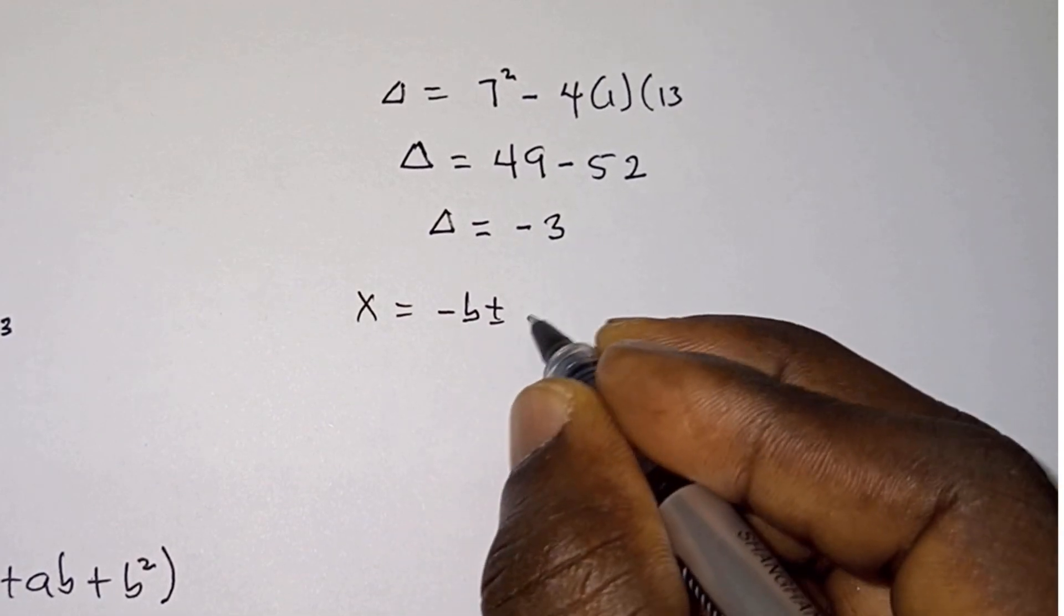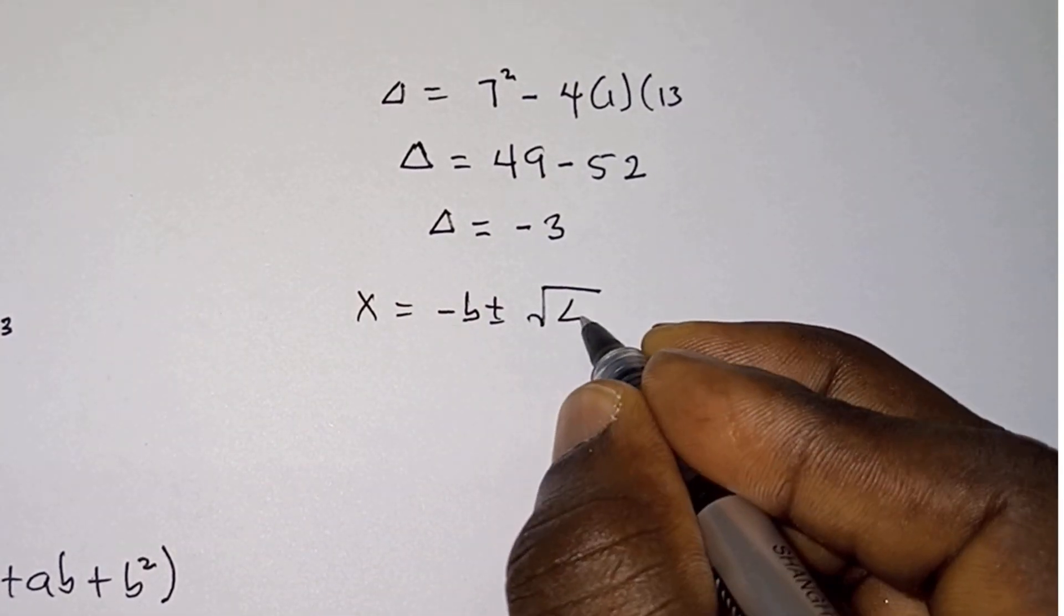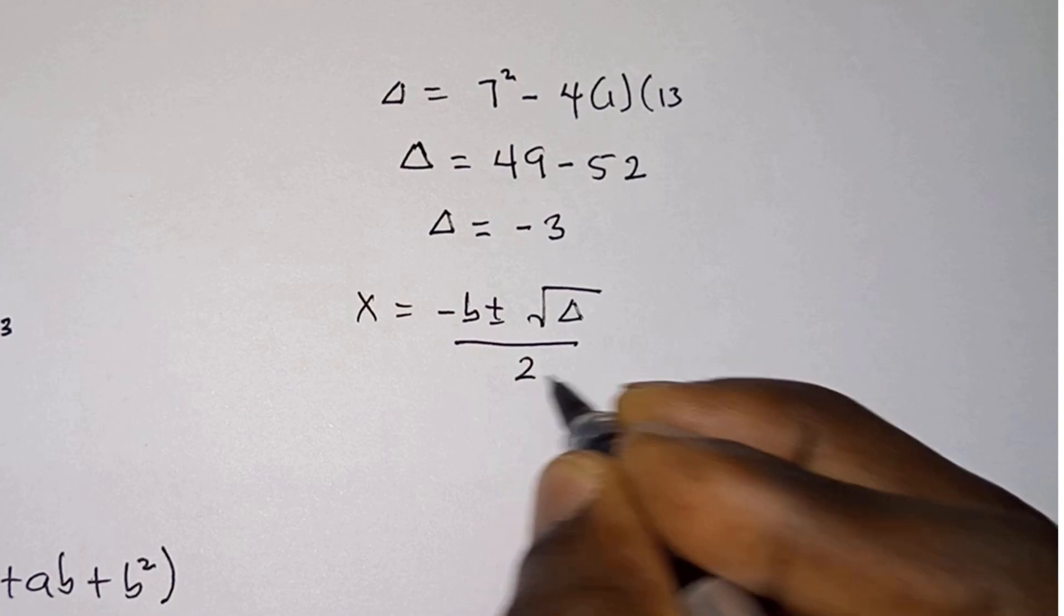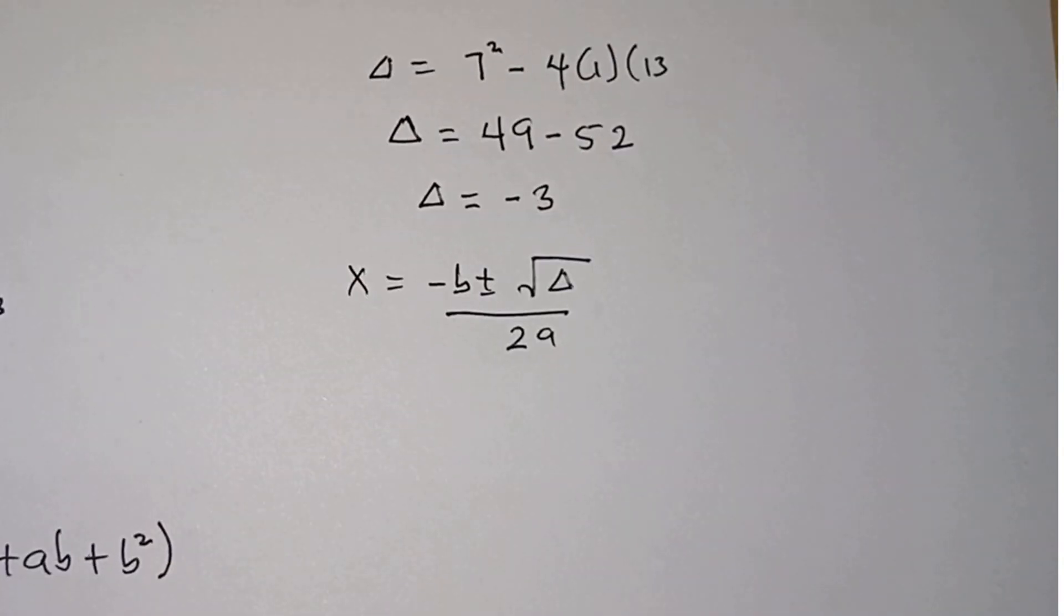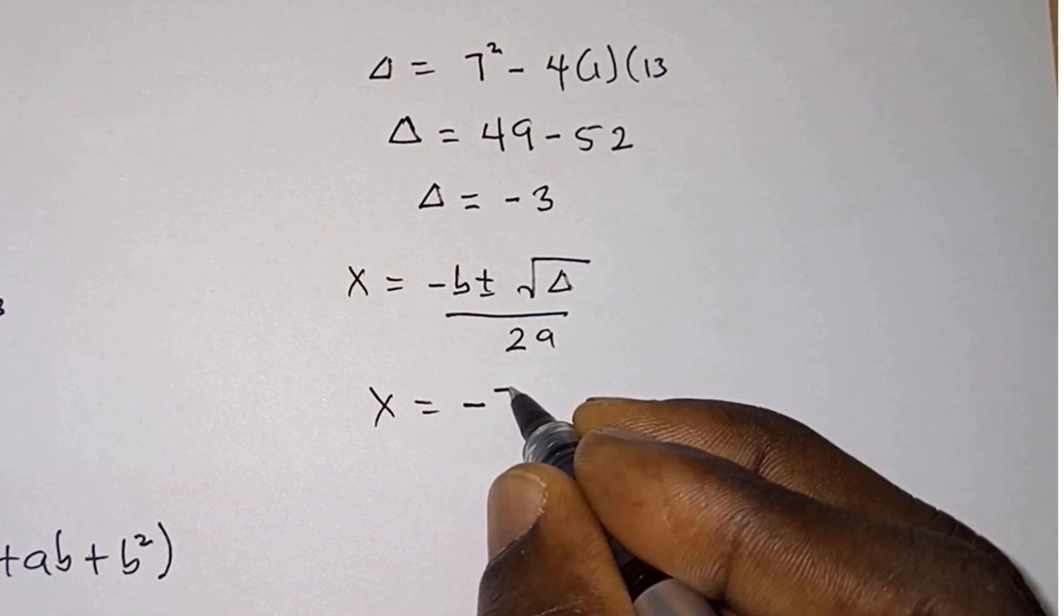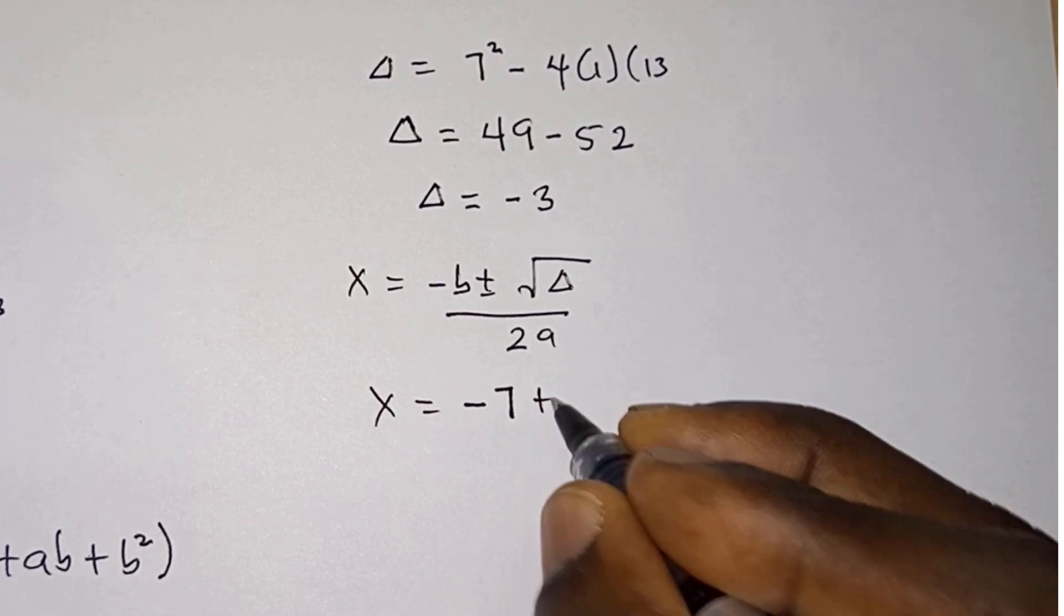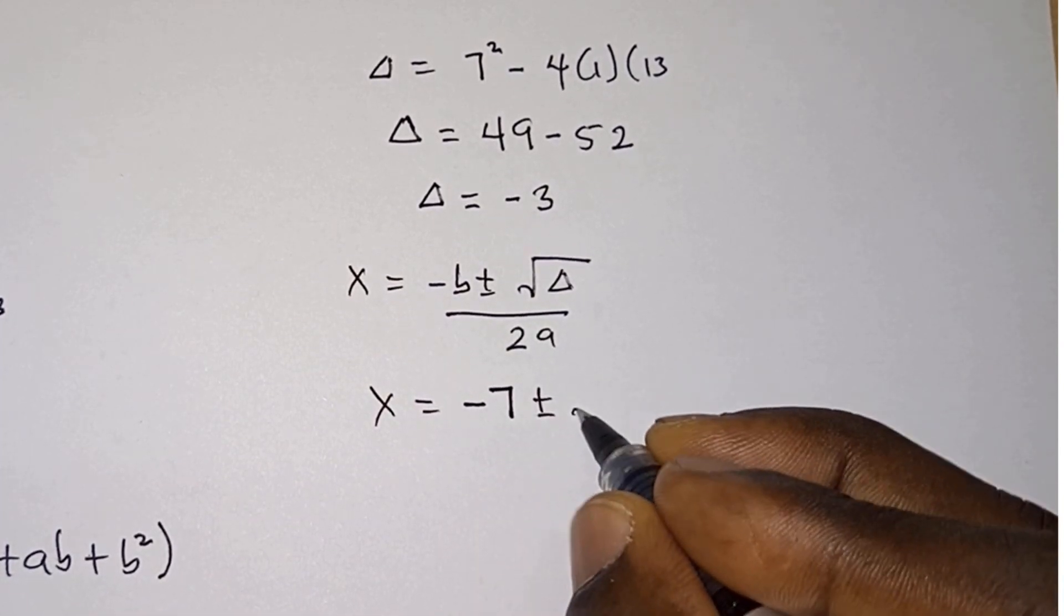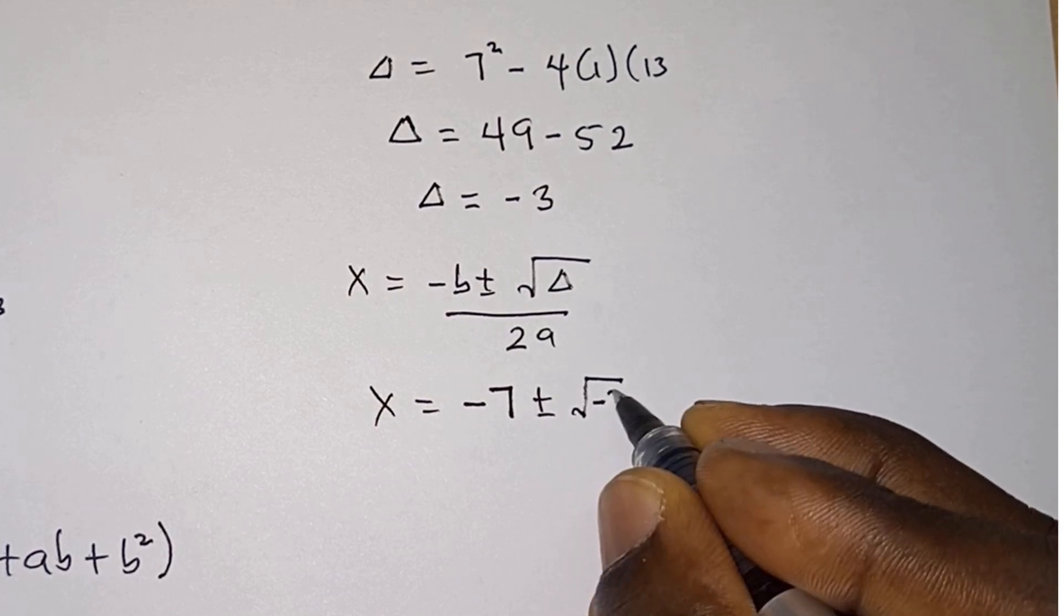By using the quadratic equation, x equals minus b plus or minus square root of delta divided by 2a. So we have x equals minus 7 plus or minus square root of negative 3.